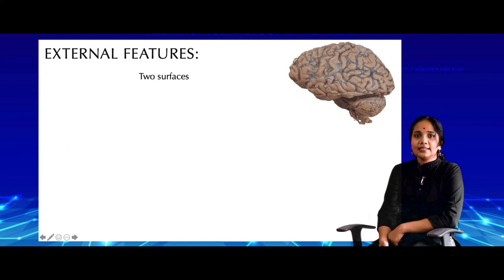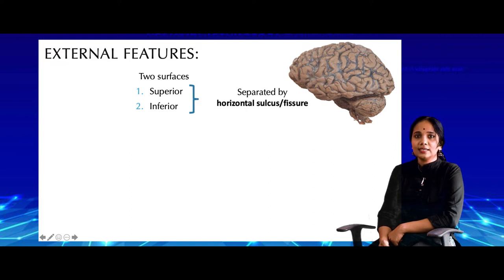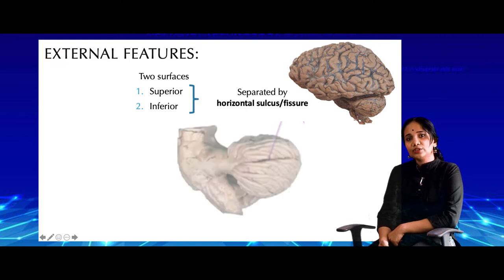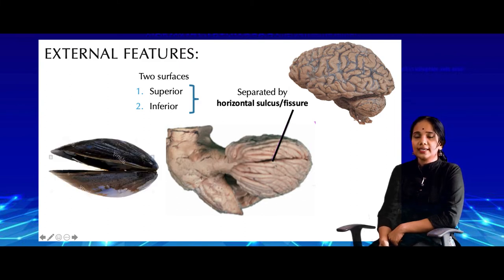Continuing with the external features, the cerebellum has two surfaces — a superior and an inferior surface — separated by a fissure called the horizontal fissure or sulcus. In the lateral view, this is how the cerebellum looks, and you can see the horizontal fissure. It actually looks a lot like an oyster.